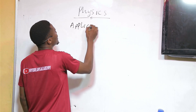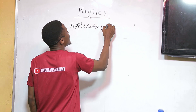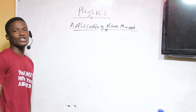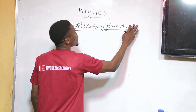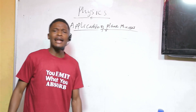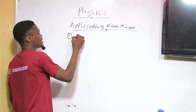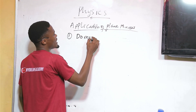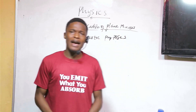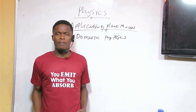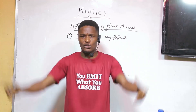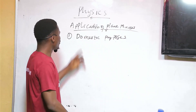Applications of plane mirrors — where and how are plane mirrors used? The first application is for domestic purposes. For example, you have a mirror in your house; after taking your bath, maybe you're going out, you finish wearing your clothes, and you stand in front of your mirror to check how well dressed you are. That kind of mirror is a plane mirror.